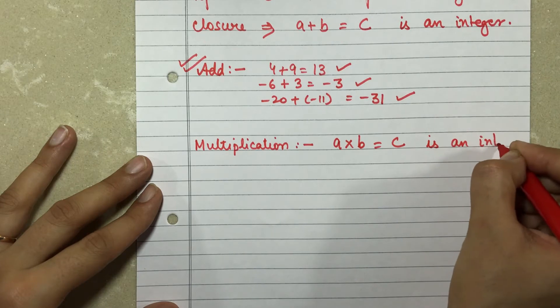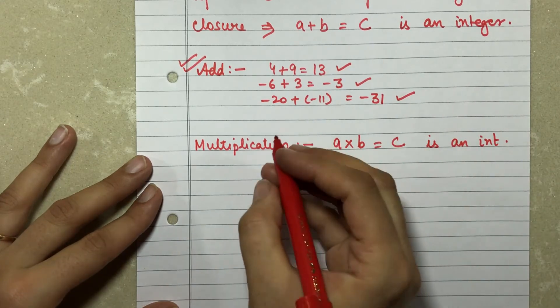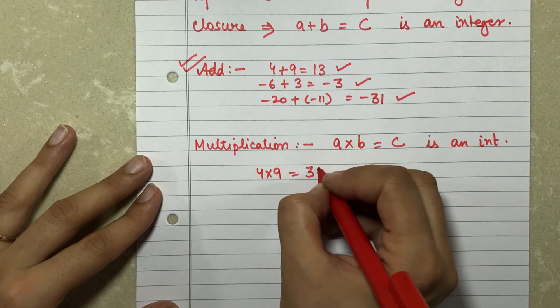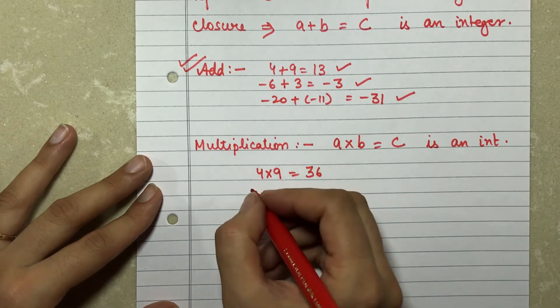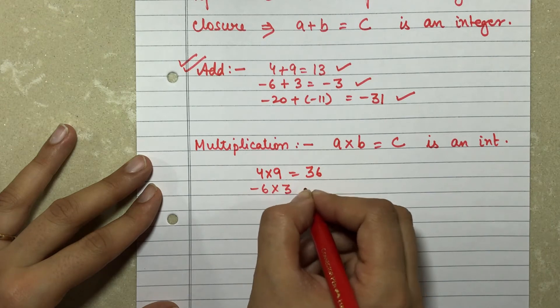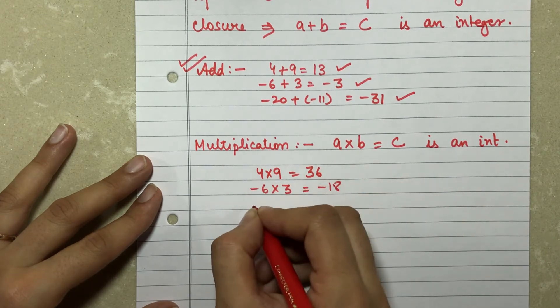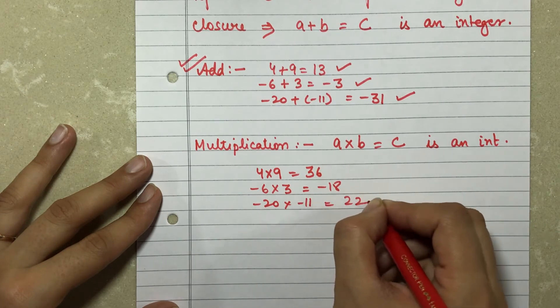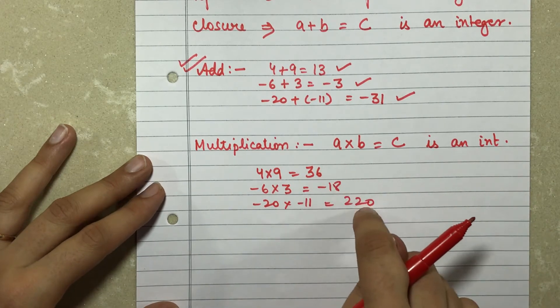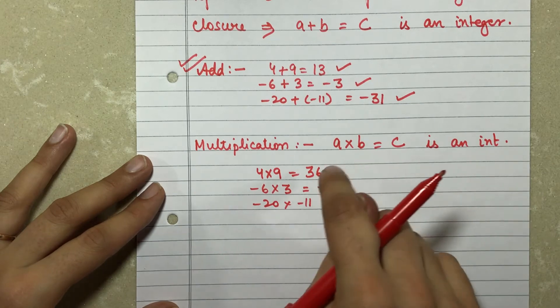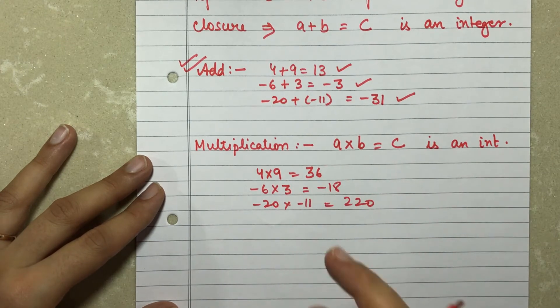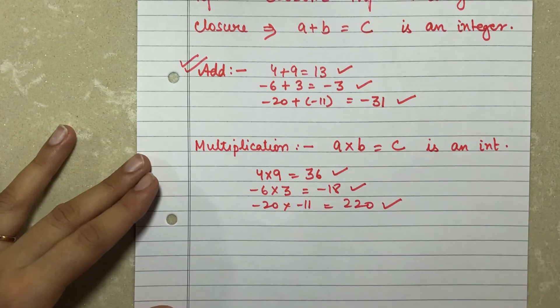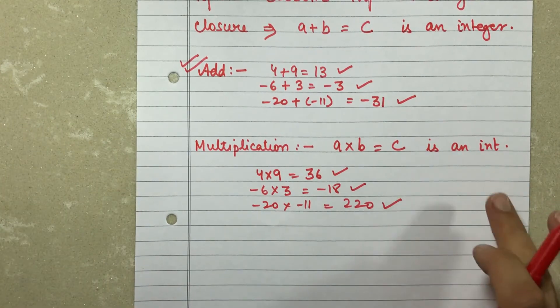Alright, so let's check. Let's take three sums. 4 into 9 gives me 36. Minus 6 into 3 gives me minus 18. And minus 20 into minus 11 gives me 220. Again, if I see my answer, that is my C for all three. These are integers: 36, minus 18, and 220. All of them are integers.